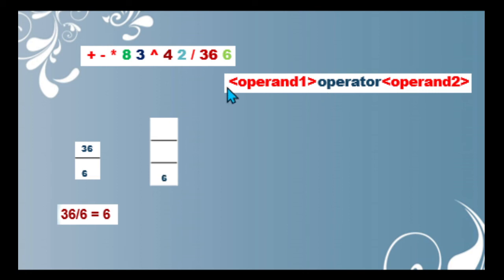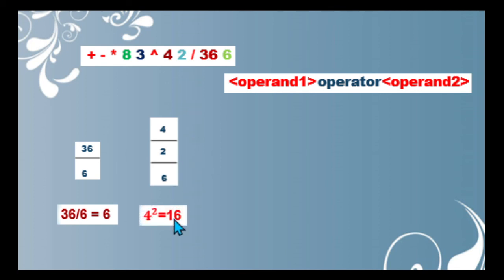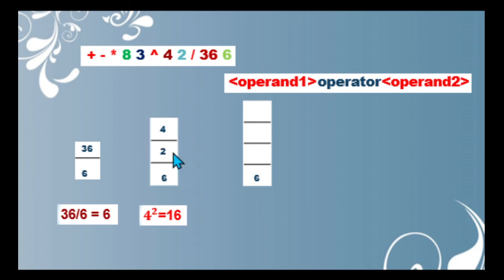We continue scanning. We have 2 — an operand, push it on the stack. Then 4 — also an operand, push it on the stack. Then exponent symbol — this is an operator, so we pop out the last two operands: 4 is operand 1 and 2 is operand 2. We perform exponentiation: 4 raised to the second power equals 16. Our stack still contains 6. We push the obtained value 16 onto the stack.